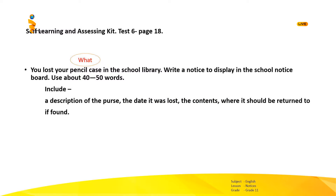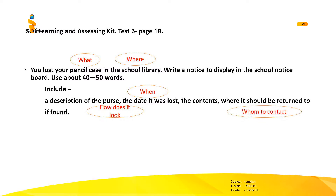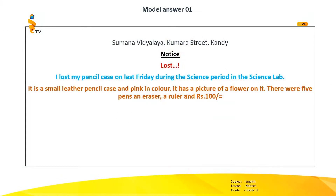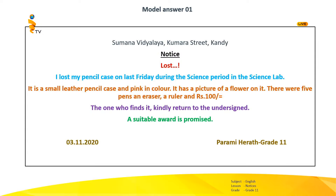Let's try to match the format of the mind map and the language utterances we learnt with this task. Your pencil case gives the answer to the WH question 'what'. 'In the school library' gives the answer to the question 'where'. Remember the language utterances for describing the object — how does it look — and give the exact date when it was lost, and also tell whom to contact if you find the pencil case. Now this is the model answer I have written — the name of the organisation, notice, the topic, the beginning, the description of the object, further action to be done, complementary clause, date and signature.